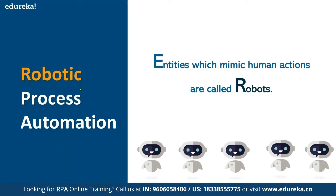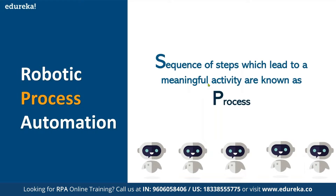Let's understand each word in RPA one by one. 'Robotic' means it mimics human action — anything that mimics human action we call a robot. For example, in the software industry, when we type something in a text box, click a button, or visit any website, those are human actions. If we automate those actions, we call it a robot — that is the meaning of mimicking human action.